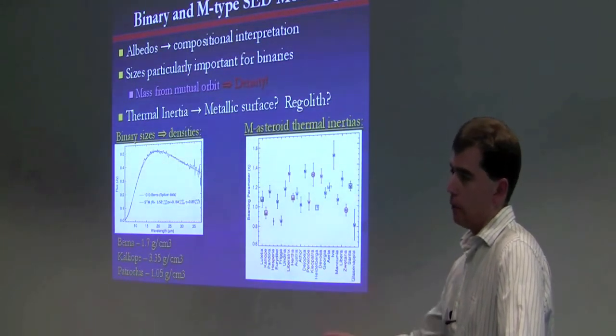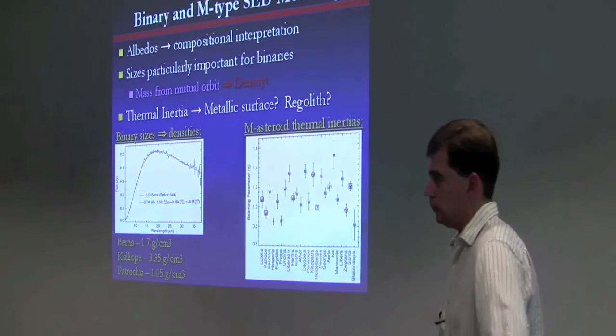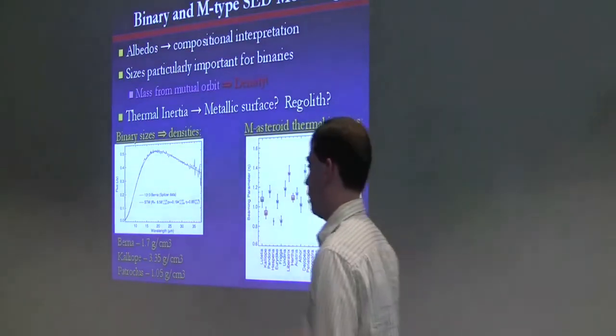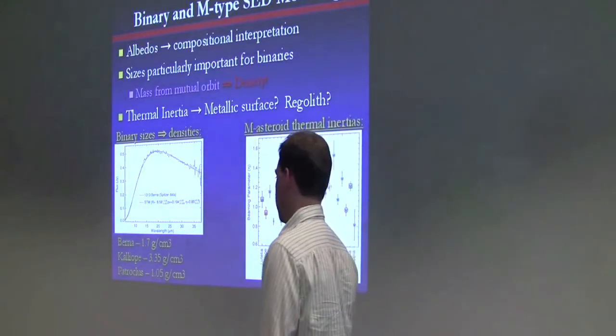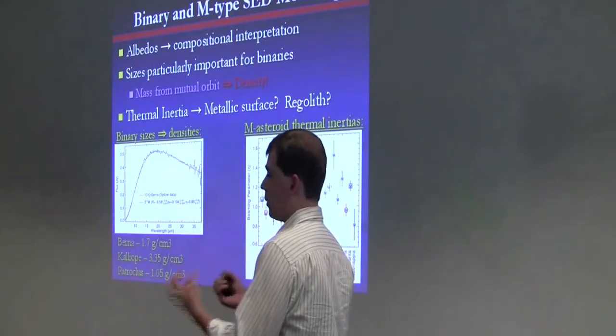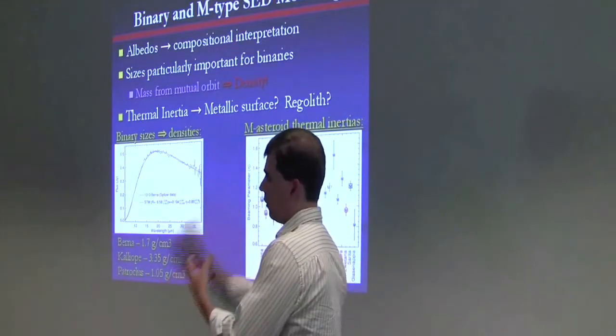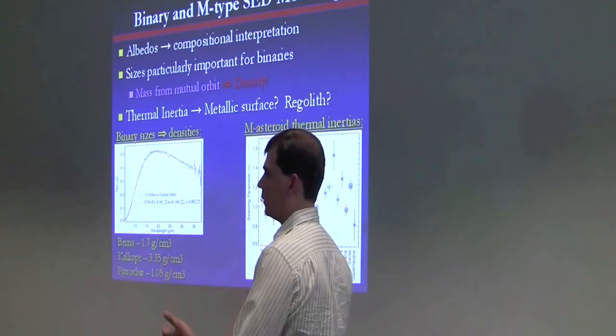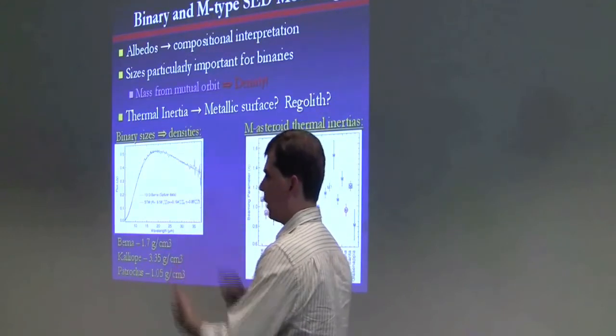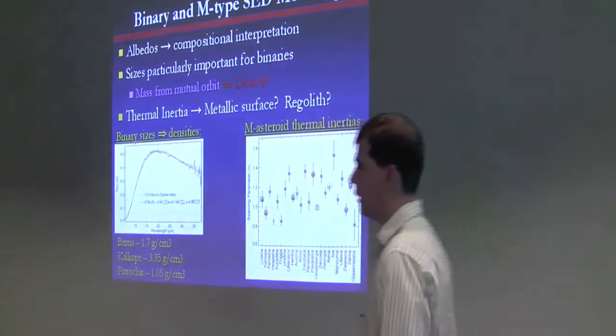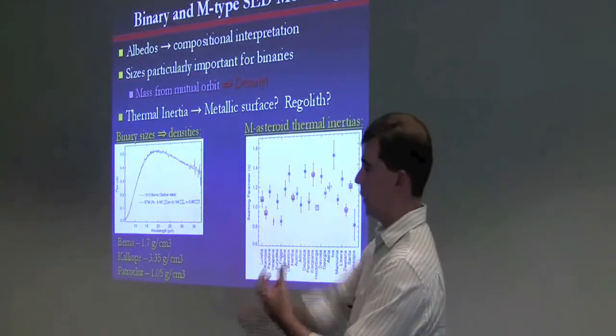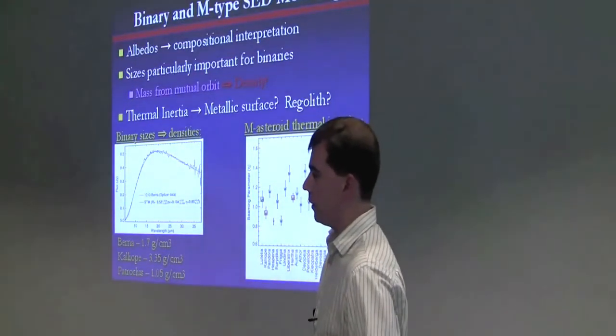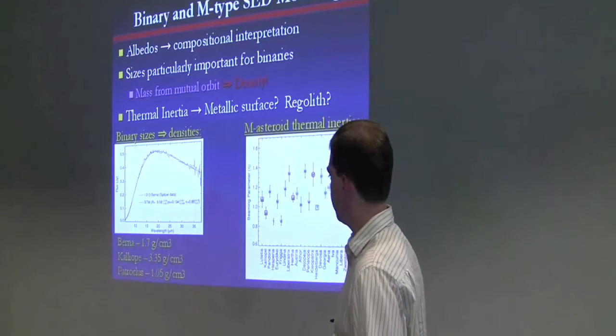And when you say binary, you just mean any size satellite? Any size satellite. And it doesn't imply it. In this case, Patroclus is an equal-sized binary. But it can just be a little moonlet, like dactyl around Ida, just a tiny moonlet. Also, anything that you can track to get the mass of the system.